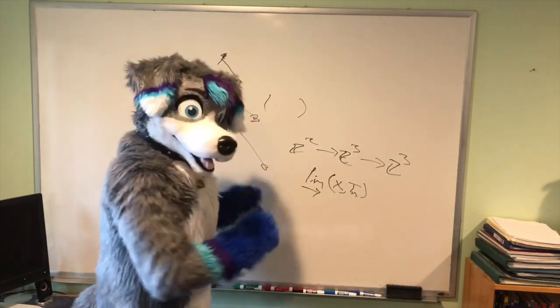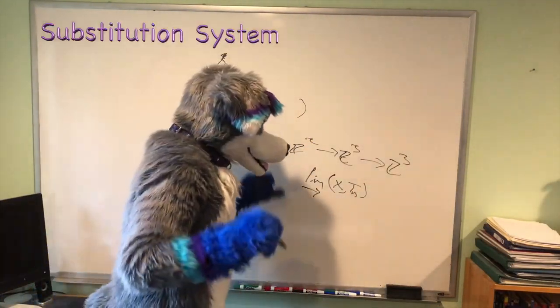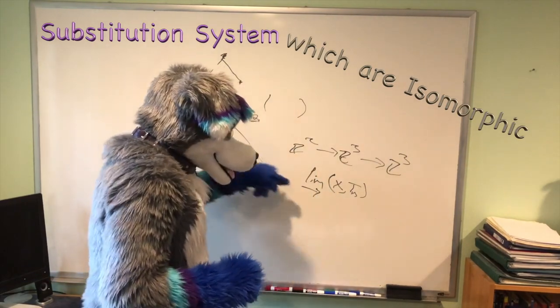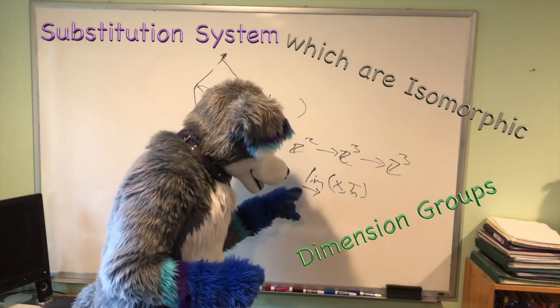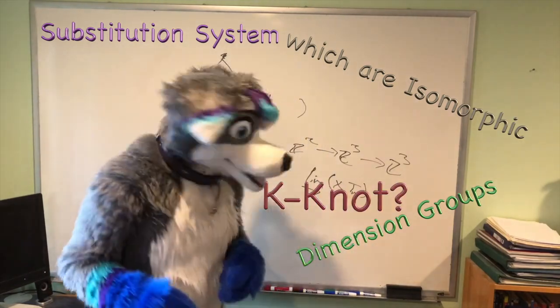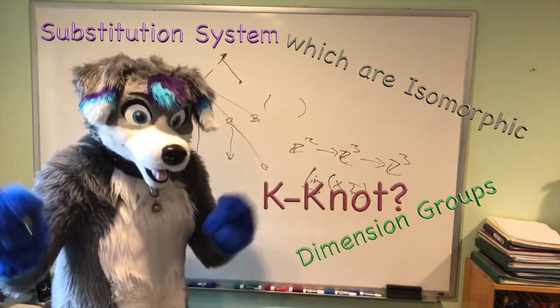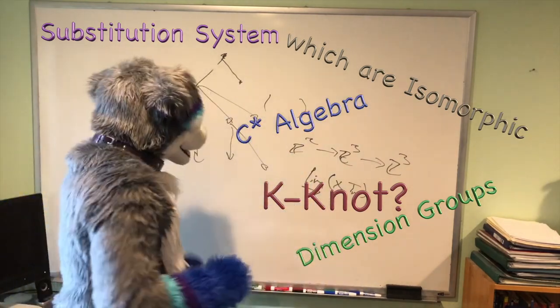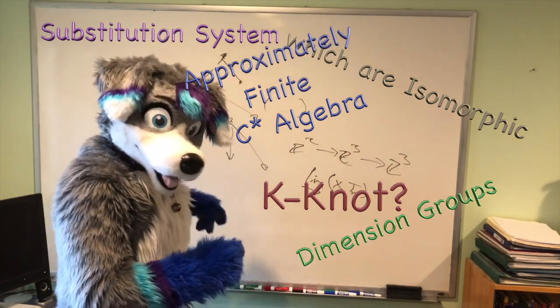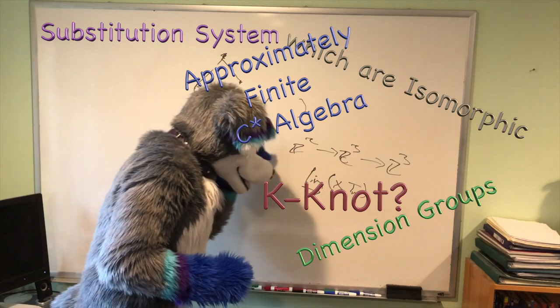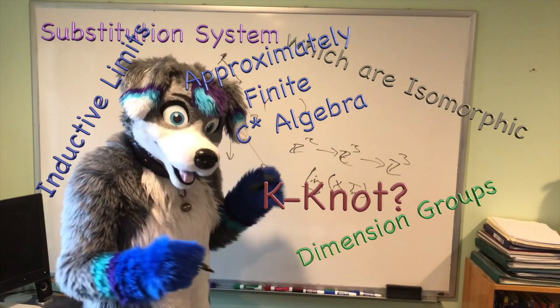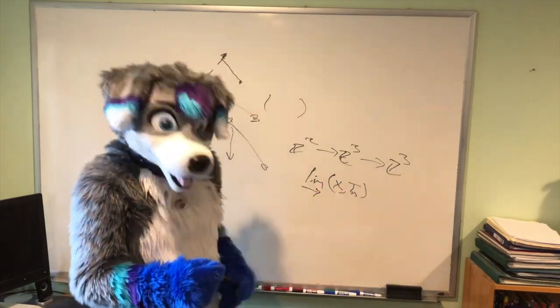With the Bratteli diagram, you can associate a substitution system, and then the substitution systems turn out to be isomorphic, if you consider the dimension groups. And this is actually, the dimension groups turn out to be the K-naught groups, so you can talk about K-theories, and then there's, of course on the other hand, there's the C-star algebras and all that stuff. And then you get the theory about the approximately finite C-star algebras, via the inductive limits, which are then just a generalization of describing multi-matrix algebra, so it's pretty cool.